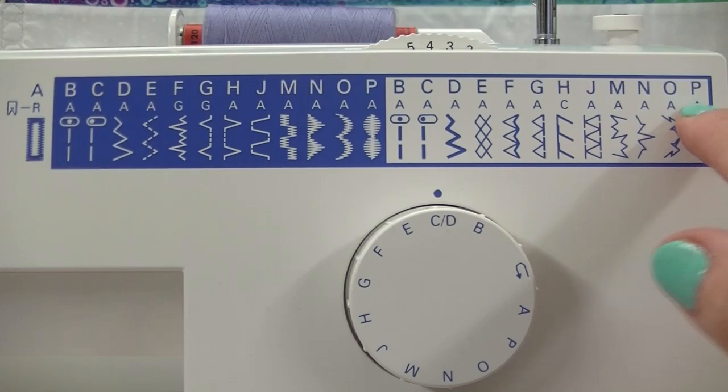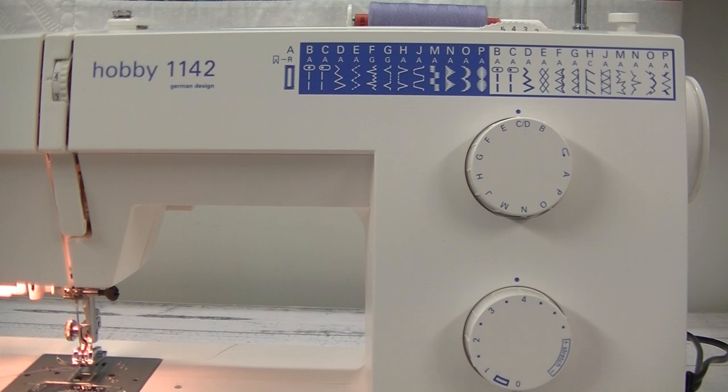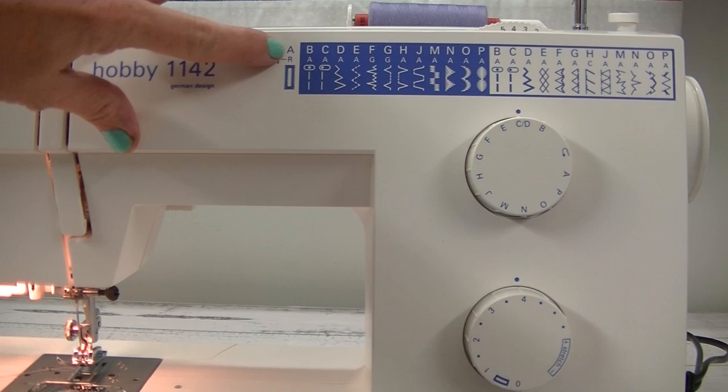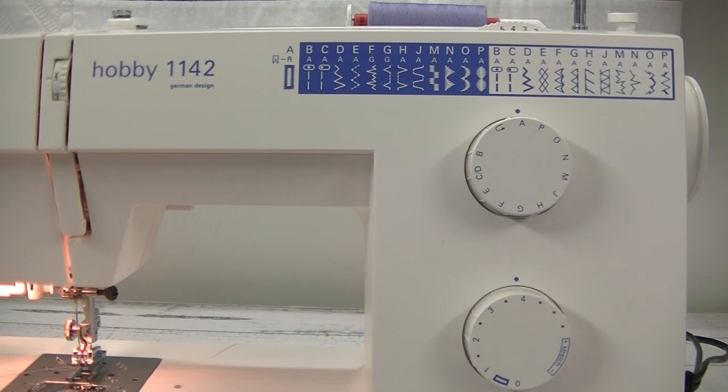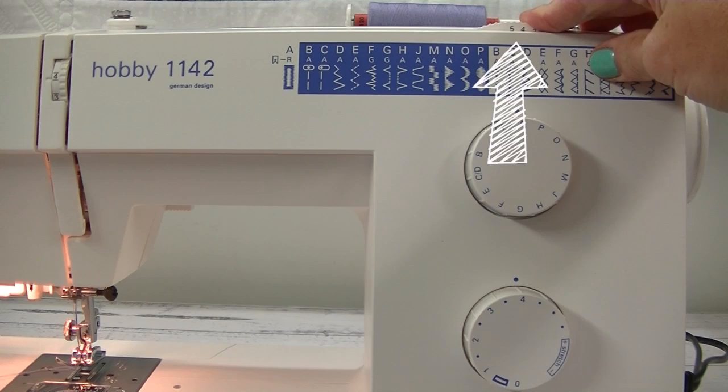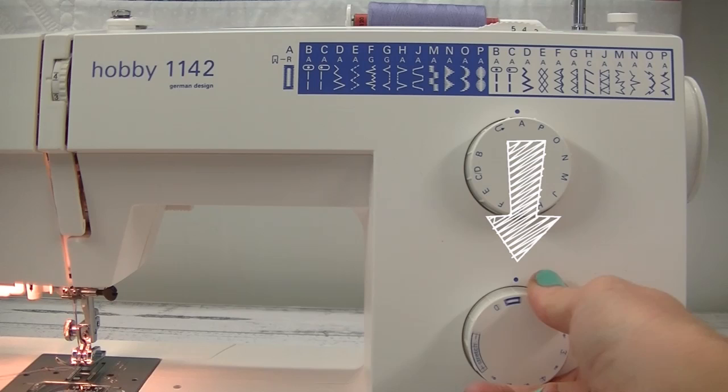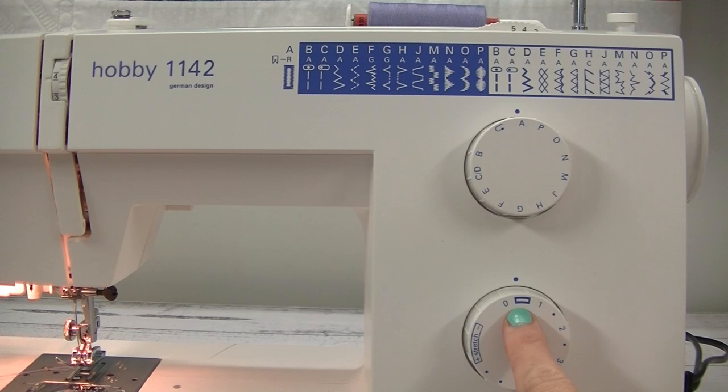To create our one step buttonhole, we need to adjust some of the settings on the machine. Firstly, we need to select buttonhole, which you'll see on the stitch menu at the top is A. Turn your stitch selector to A. You'll also note that we require foot R. This is the buttonhole foot. The width of your buttonhole foot is recommended between four and five. And the length of your stitch is down to between zero and one. And you'll notice there is a buttonhole picture on the dial itself to help you know where to go. So the closer you move to zero is the tighter or the denser your stitches will be. So I'm going to leave it a couple of clicks above zero. The next thing we need to do is attach the buttonhole foot.